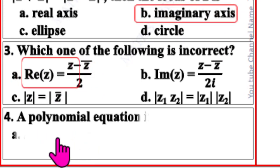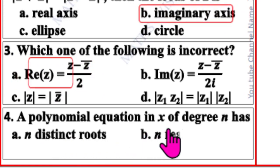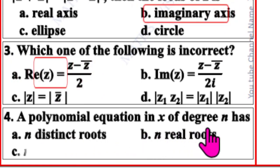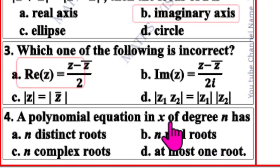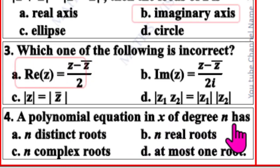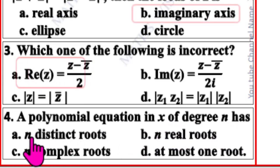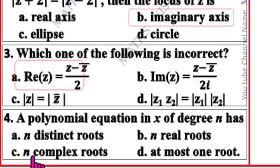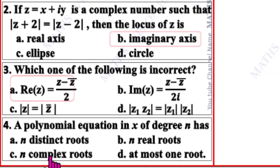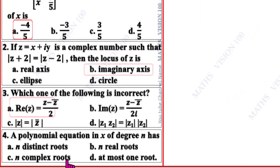Fourth question. A polynomial equation in x of degree N has — four options are given. The correct option is C: N complex roots.